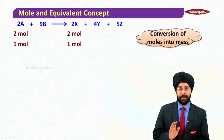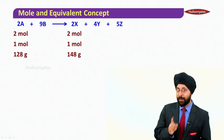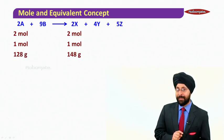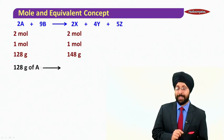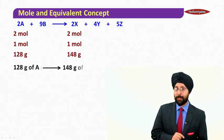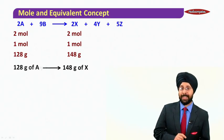And we first convert the moles into mass. So 128 grams of A will give you 148 grams of X based on the molecular mass data that was given to us. So from here, we can say 128 grams of A produces 148 grams of X.